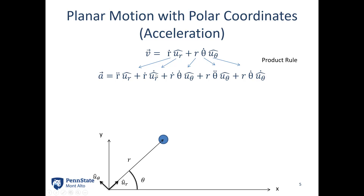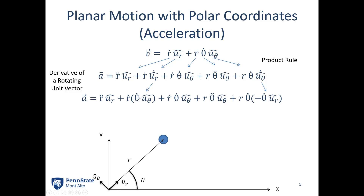The derivative of the rotating unit vectors is as follows: the derivative of ur over time is theta-dot in the u-theta direction, and the derivative of u-theta — that is, u-theta-dot — is negative theta-dot in the ur direction.